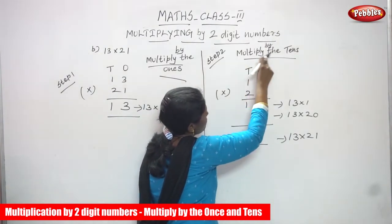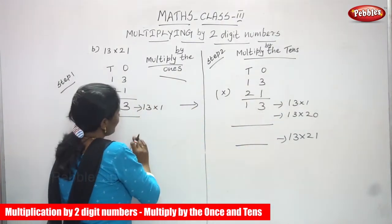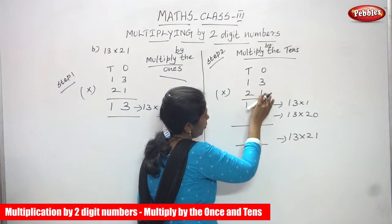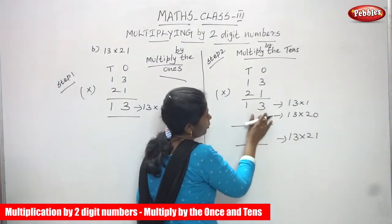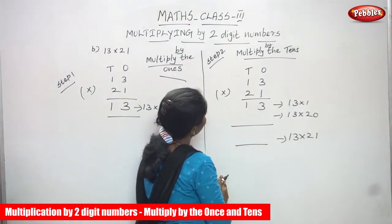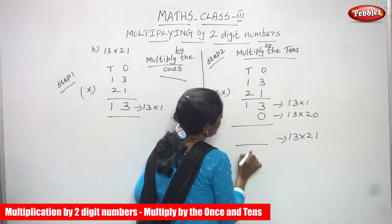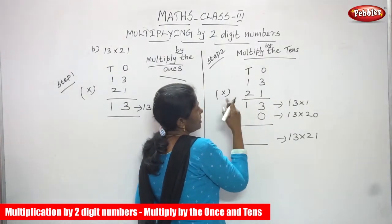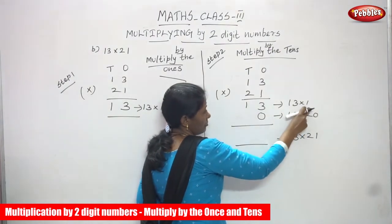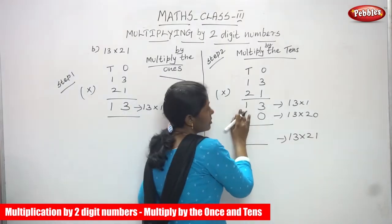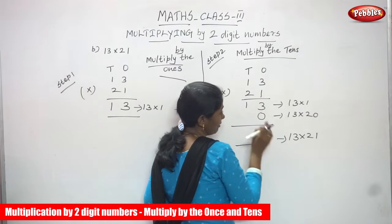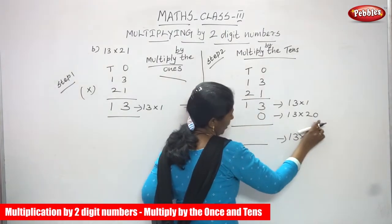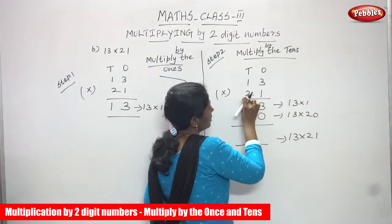Whatever I've written in the ones place multiplied by the ones, the answer is 13. First I have to write that answer — 13 into 1 is complete. Now we are going to start Step 2, multiplying by the tens. In the ones place you must put 0, because you are multiplying by 2 tens, which means 20 — that is 13 into 20. So 2 tens means 2 is going to multiply by 13. Ones place: write 0. Then 3 times 2 is 6, and 1 times 2 is 2.